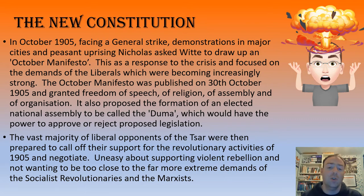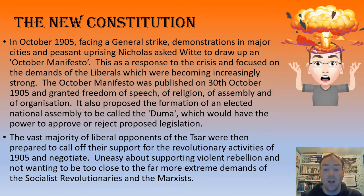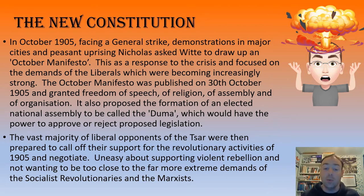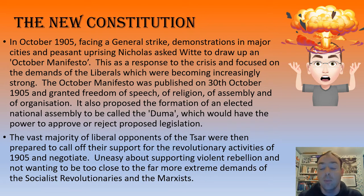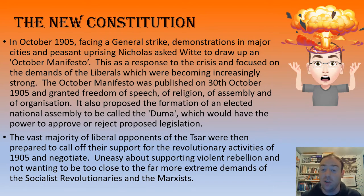At this point the vast majority of liberal opponents of the Tsar were prepared to call off their support for revolutionary activities. They had been uneasy going side by side with revolutionaries anyway - they didn't really want a violent rebellion, they wanted reform and political say. This splits the liberals from the Social Revolutionaries and the Marxists, which were really important revolutionary groups that I'll look at in more detail in future videos.